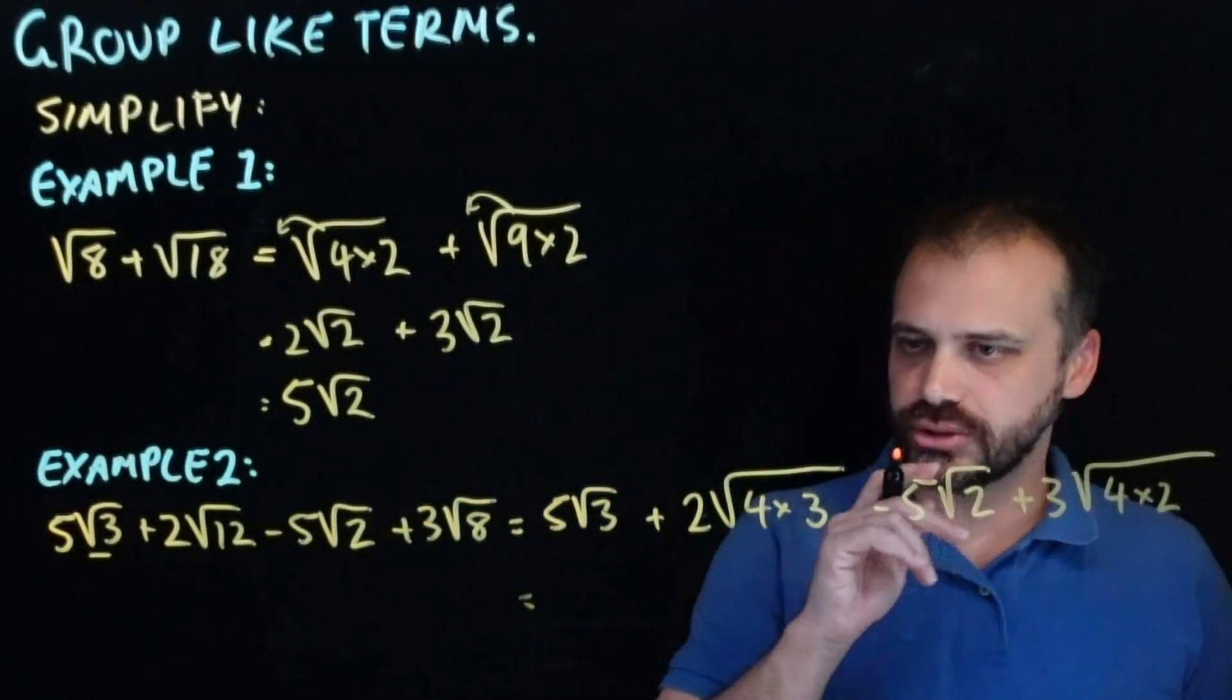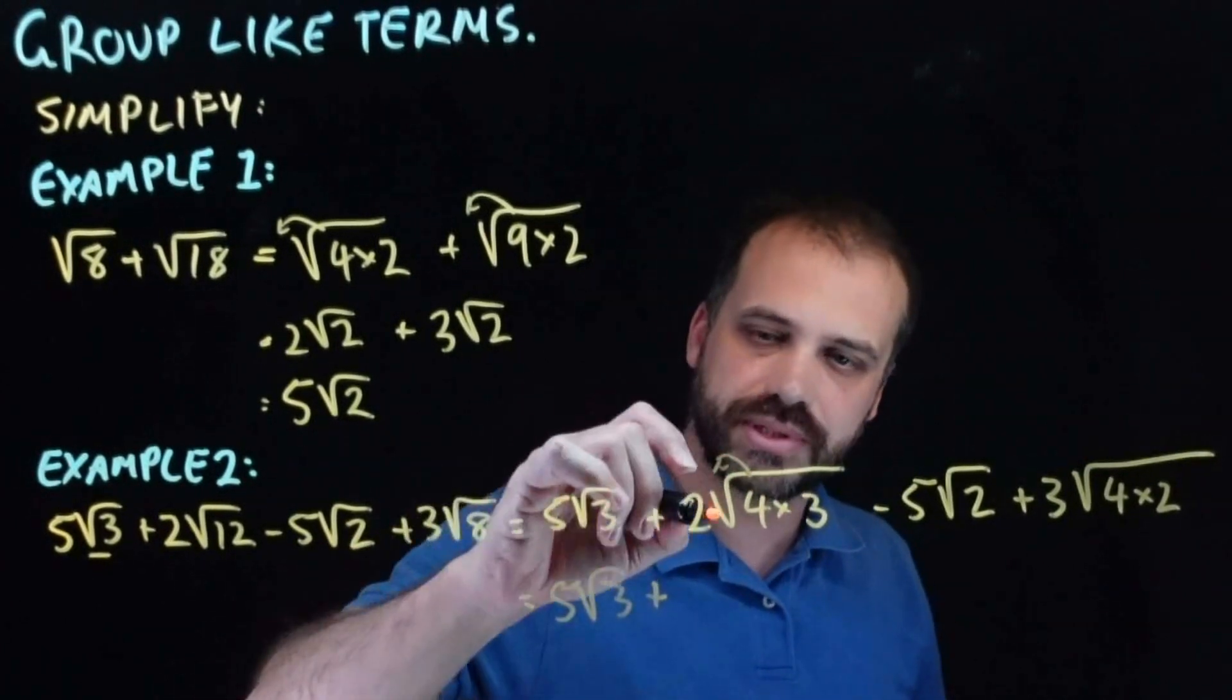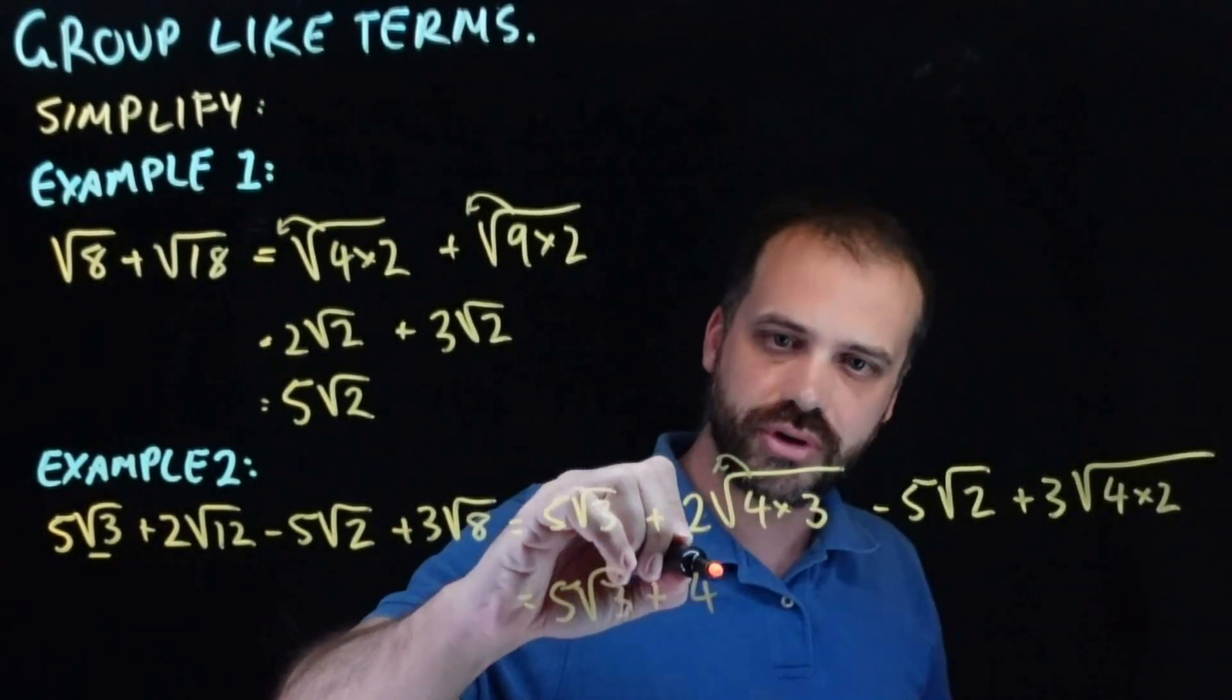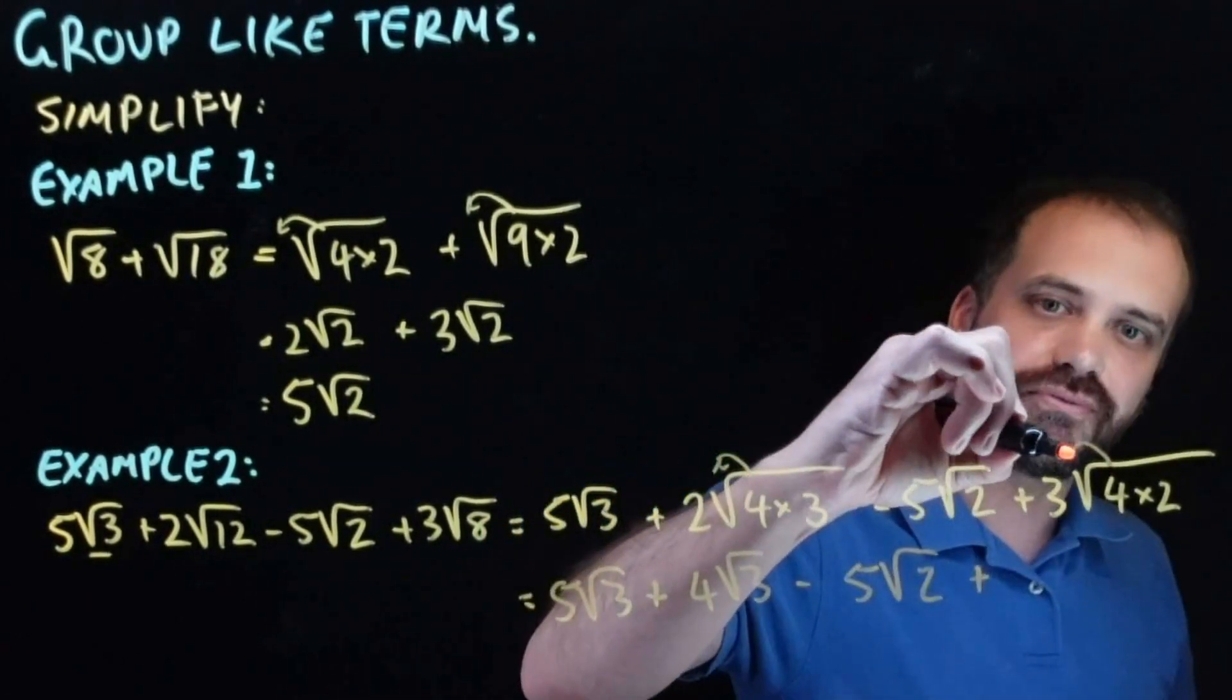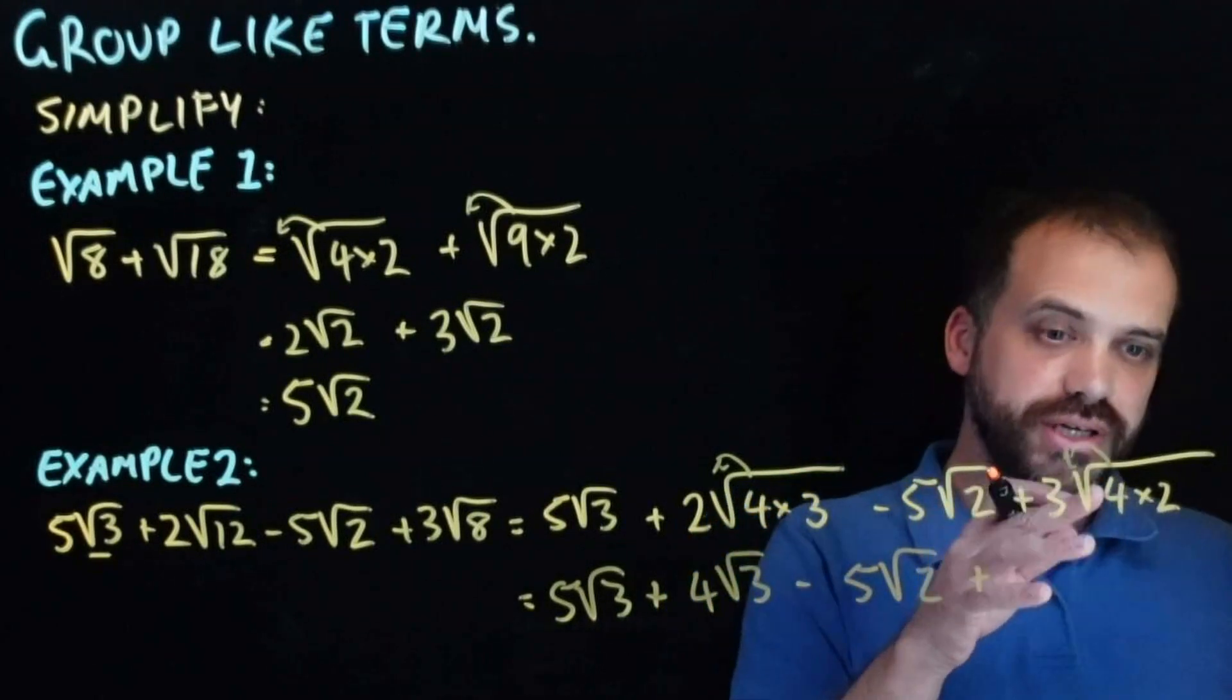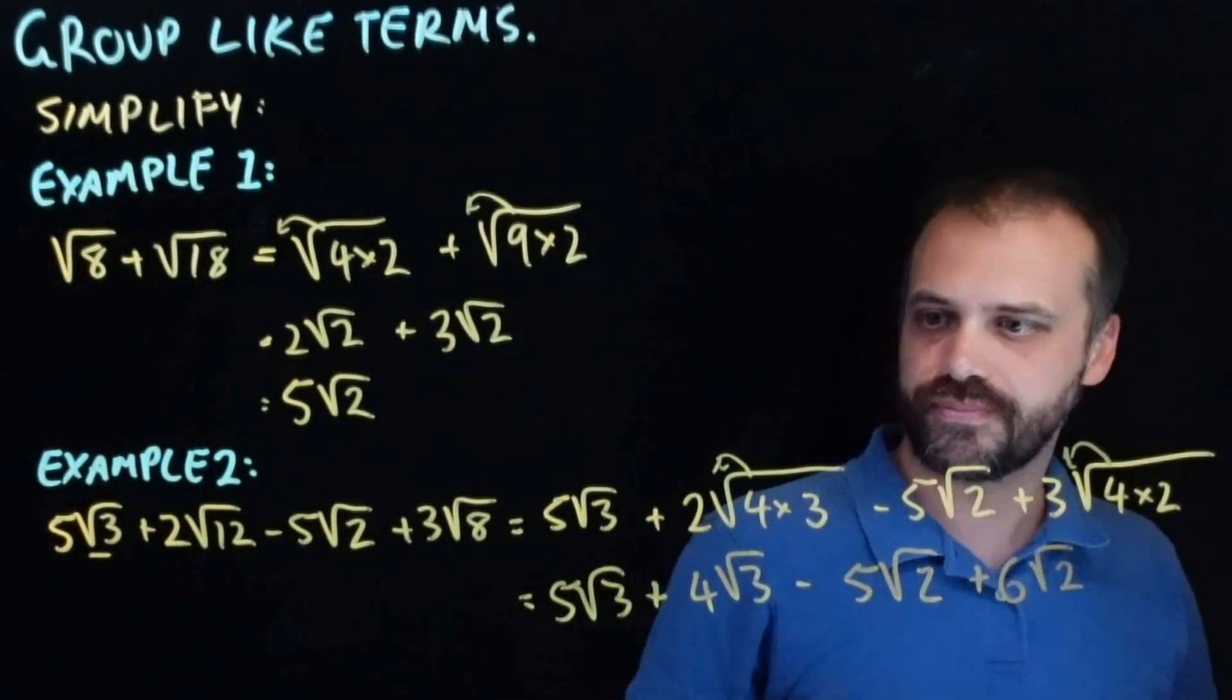Let's take a look. I'll write it all out again. 5 root 3 plus the 4 comes out. So that's 2 times 2 is 4 root 3 minus I've got a 5 root 2 there. And I bring the 4 out here. 3 times 2 is 6. 6 root 2.